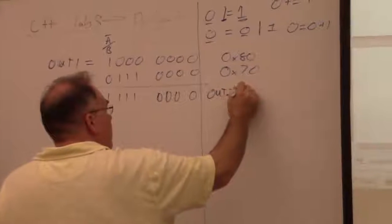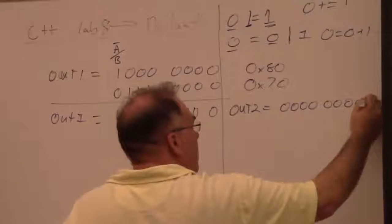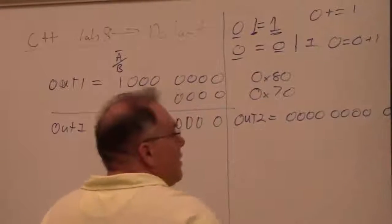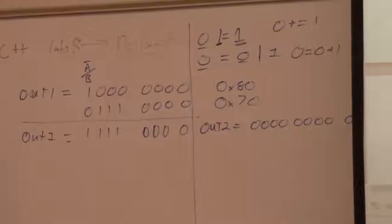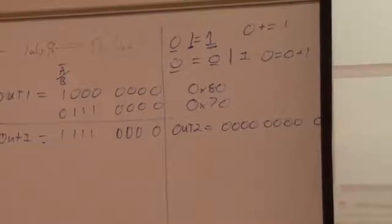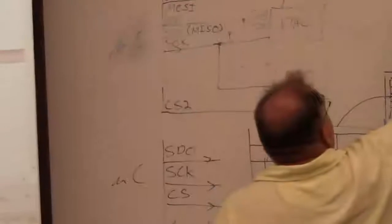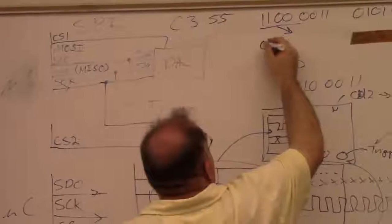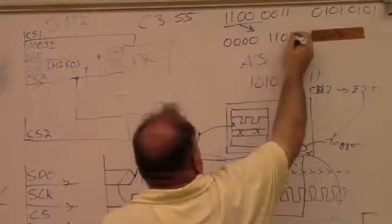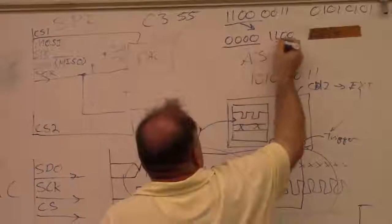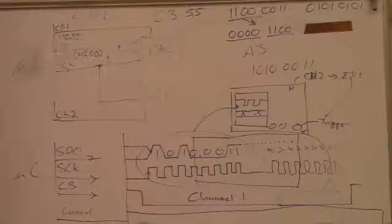So out two is equal to zero, zero, zero, zero. And then it says output one is equal to output one or with the value shifted over four times. All of these bits are going to shift four times and we're going to shift in four zeros. And then we're going to have this left over. So the value shifted four times is one, one, zero, zero.